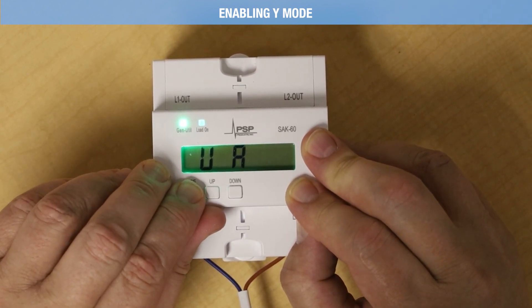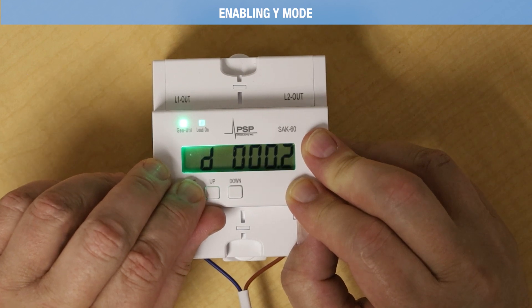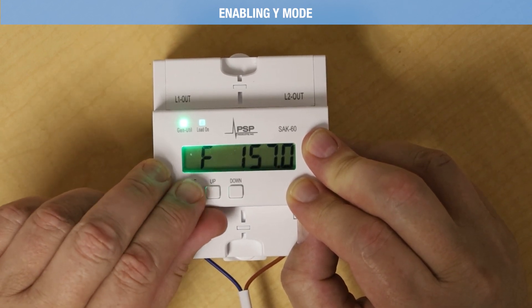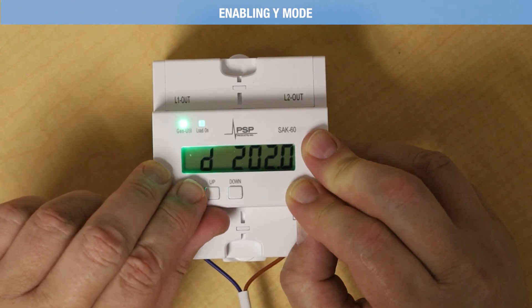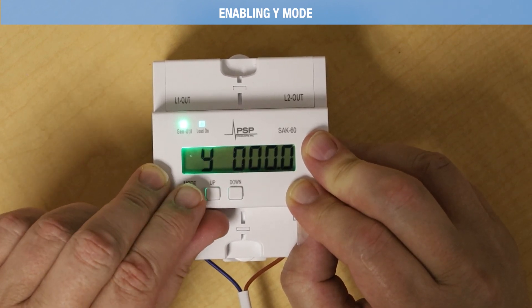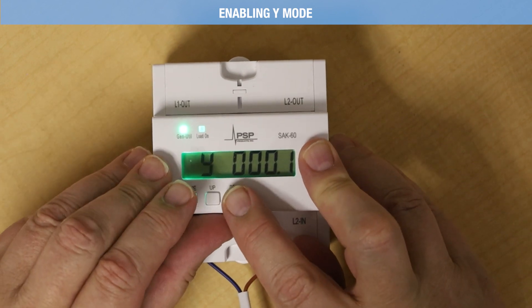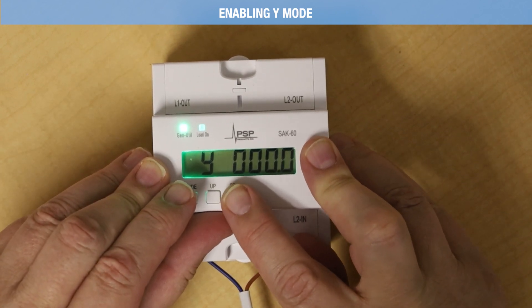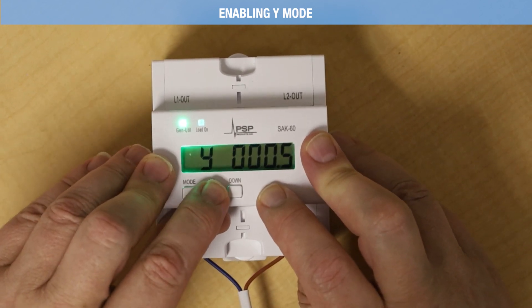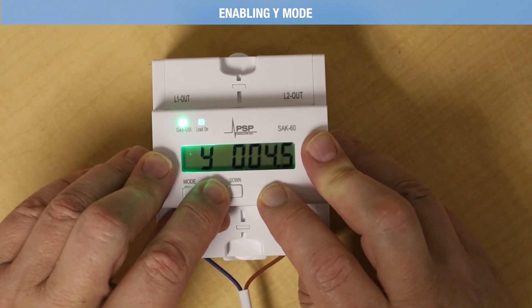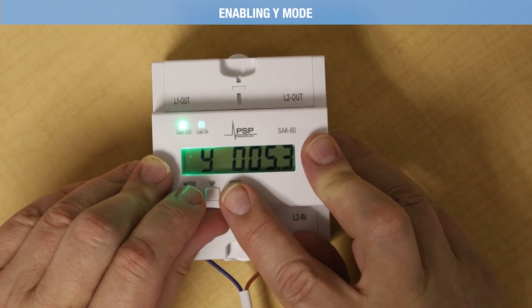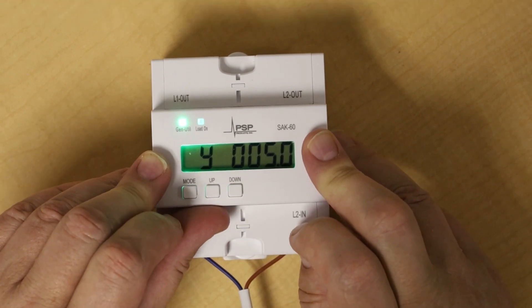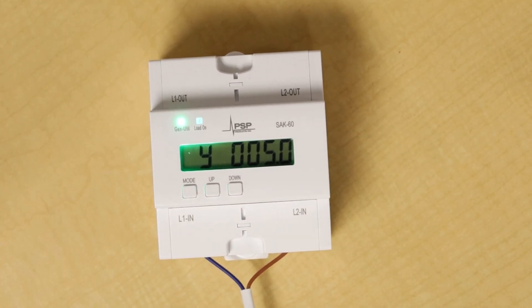Hold the mode button for 3 seconds to enter programming mode, then scroll all the way to Y. It's a lowercase Y that looks like a 4. Set Y to 5.0 minutes. You've now enabled Y mode, which will shut off the compressor upon return to utility power.